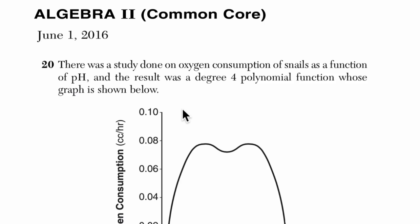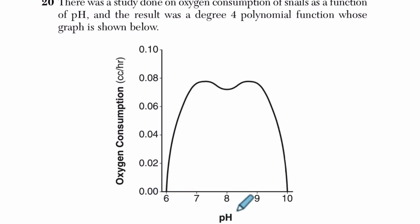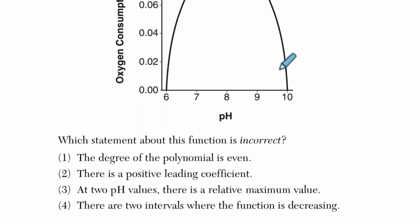Hello, welcome. Let's solve this problem together. First of all, it says there was a study done on oxygen consumption of snails as a function of pH. So how much oxygen do they consume based on their pH level? The result was a degree four polynomial function whose graph is shown below. Okay, so we have a polynomial function.